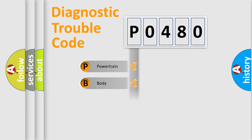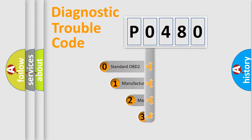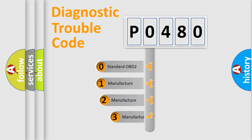The four units are: powertrain, body, chassis, and network. This distribution is defined in the first character of the code. If the second character is expressed as zero, it is a standardized error.